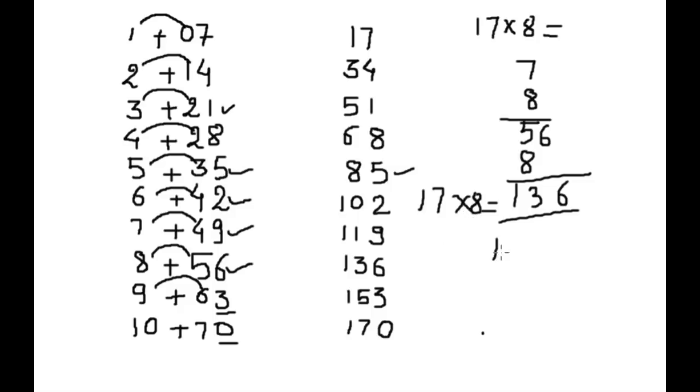It is already 8. And similarly, if you want 17×3, we can write 7×3 is 21, and add 3. It is 1 and 5, 51.